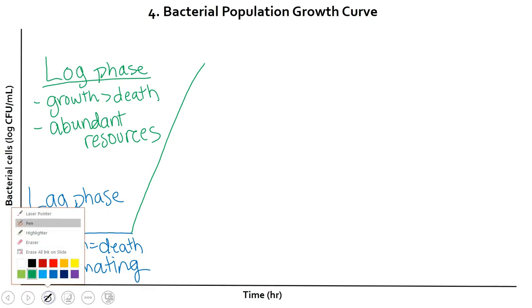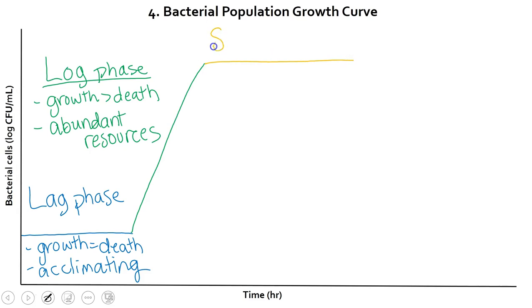However, after some time of doing that, their population will flatten out again, or at least their growth rate will flatten out again. We call this their stationary phase. And this rate, once again, growth is equal to death. This happens because the resources have started to become limited. They're not gone, but there's not enough to support infinite growth. And in ecology we would call this that they have reached their carrying capacity.